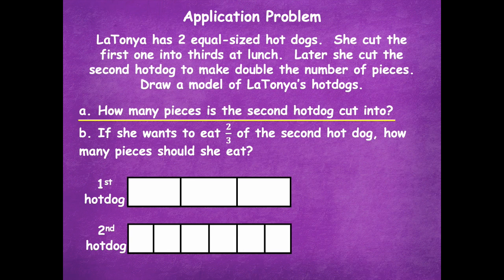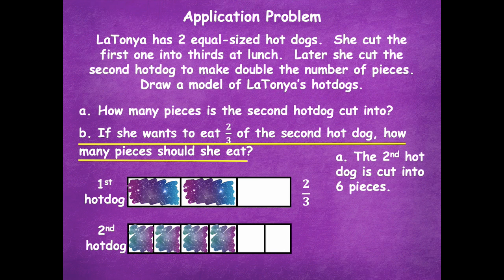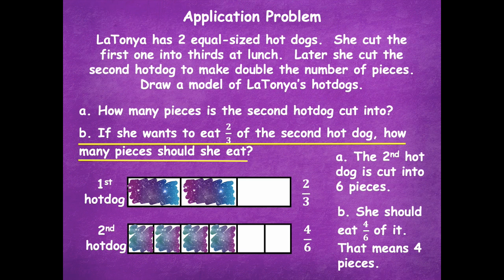For part A, it asks how many pieces the second hot dog is cut into. We just count how many parts we have in the second hot dog, and we can say the second hot dog is cut into six pieces. For part B, if she wants to eat two-thirds of the second hot dog, how many pieces should she eat? We can use an equivalent fraction. Shade in two-thirds on the first hot dog, then shade as much on the second. Now we're at the same as two-thirds — here I have four-sixths. Two-thirds and four-sixths are equivalent fractions, so she would eat four pieces.